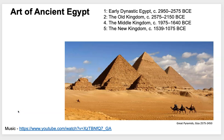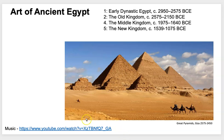Hello and welcome to Art of Ancient Egypt. We will be studying five different periods, starting with Early Dynastic Egypt around 2950 BCE and ending with the New Kingdom around 1075 BCE. We're going to be talking about the Great Pyramids, how they were built, and a whole bunch of other interesting concepts that relate to this time period.